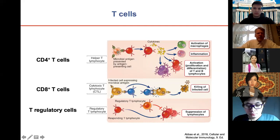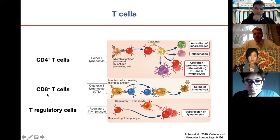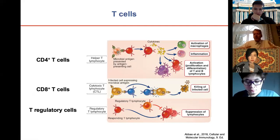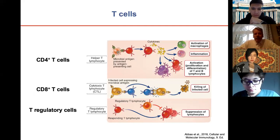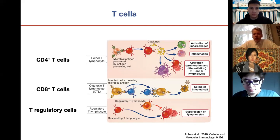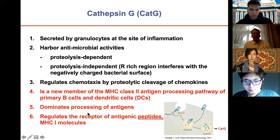CD4-positive T helper cells activate other immune cells; CD8 killer cells destroy infected cells; and T regulatory cells are important to regulate the immune system after infection and to ensure that immune cells do not cause harm — for instance, hypersensitivity reactions including autoimmunity. So tolerance and T regulatory cells are also important.